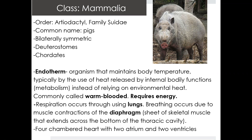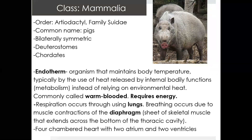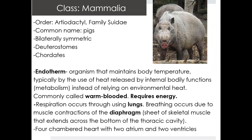Pigs are bilaterally symmetric, they are also deuterostomes, and they are chordates. Comparing them to the frogs that we previously talked about, pigs are endotherms. Remember that ectotherms were organisms that relied on the external environment to regulate their body temperatures, but endotherms are the opposite in that they can maintain their own body temperature. We rely on metabolism in order to heat our bodies — our organs functioning allows for the release of heat that will internally keep our bodies at a certain temperature. Endotherms are often referred to as warm-blooded animals.